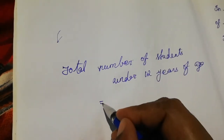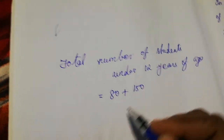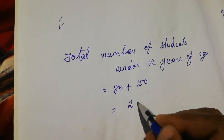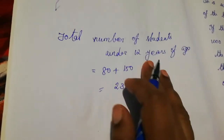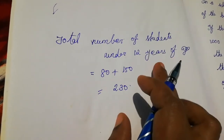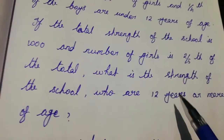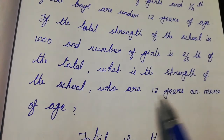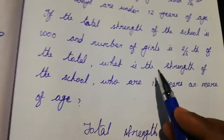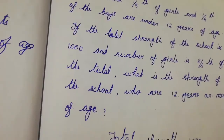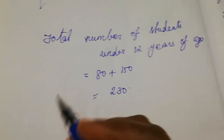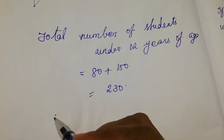Total number of students under 12 years of age is 80 plus 150, that is 230. Our question asks for the strength of the school who are 12 years or more of age — that is 12 years and above.